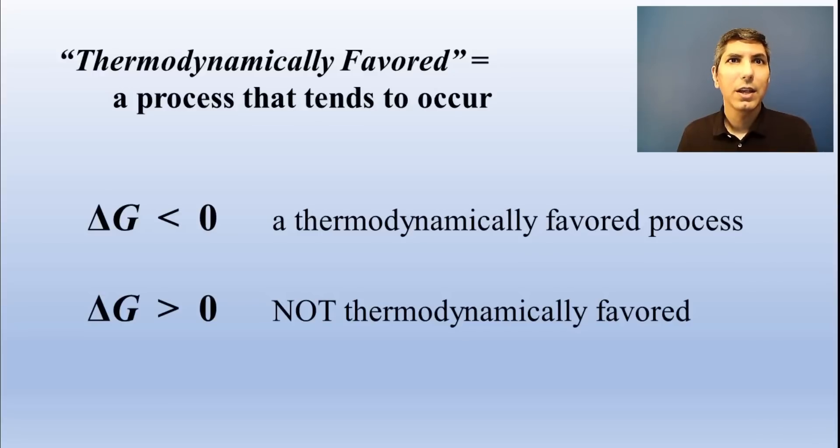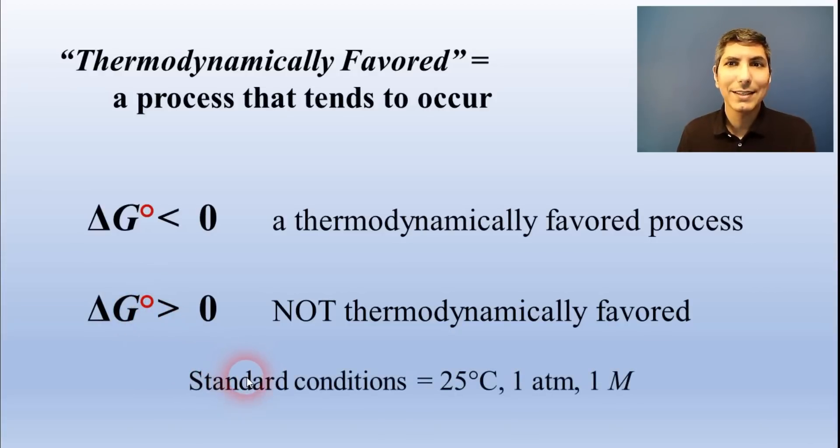Delta G, as well as delta S and delta H, are usually calculated at standard conditions, symbolized with this little degree sign. That degree sign tells us that the process is at 25 degrees Celsius, 1 atmosphere pressure, and 1 mole per liter for any solutions.